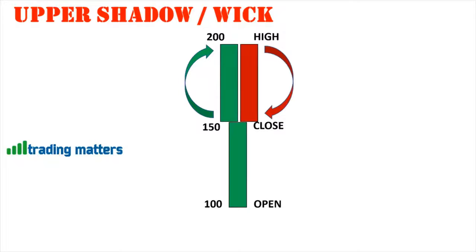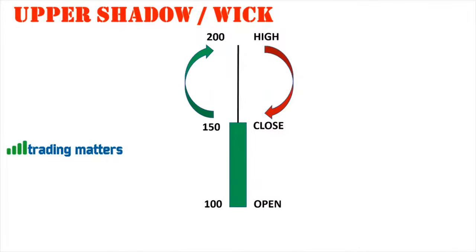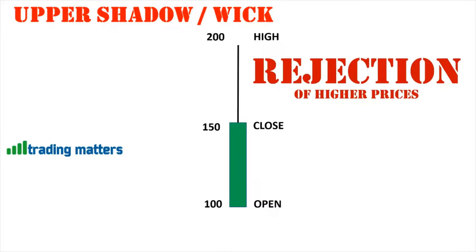This results in the formation of a red candle. The red candle and green candle between 150 and 200 compensate each other, resulting in the formation of a wick. This wick indicates that between 150 and 200, buyers pushed the market to 200 and sellers pushed it back to 150. So rejection of prices from 200 to 150 is indicated by this wick. Thus, the upper wick always indicates rejection of higher prices.